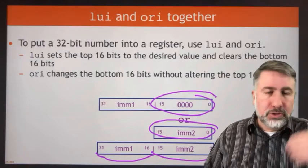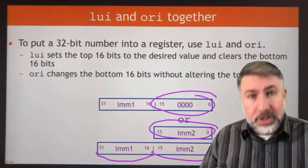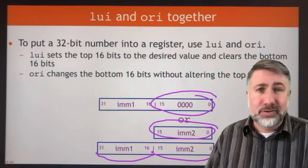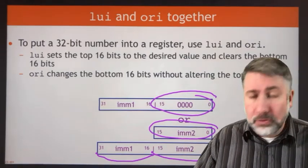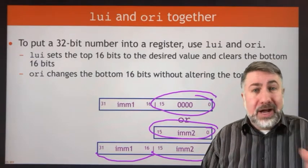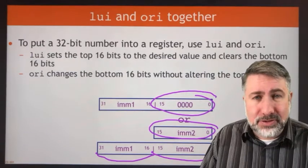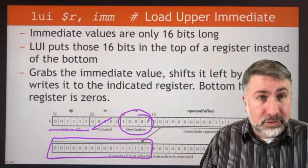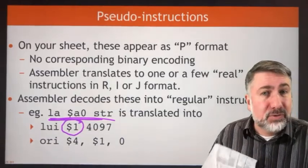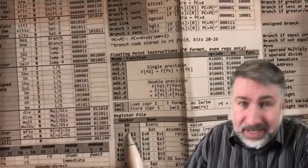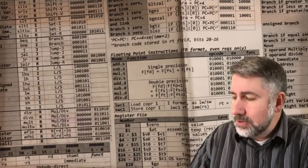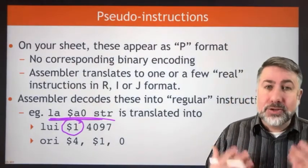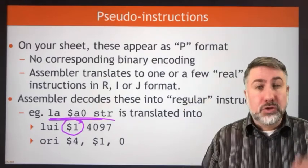If you ever need to create a 32-bit number, you can use load upper immediate and OR immediate, or you can use the pseudo-instruction LA (load address), which loads an address into a register but can also be used to load any 32-bit number. You need a register to build this in — you can't build it in the register you're using because you'd wipe out other information. So here is our first opportunity to use a special reserved register: load upper immediate goes into register one, which is the assembler temporary register — a reserved register that exists just so the assembler has a register to use for building temporary values.